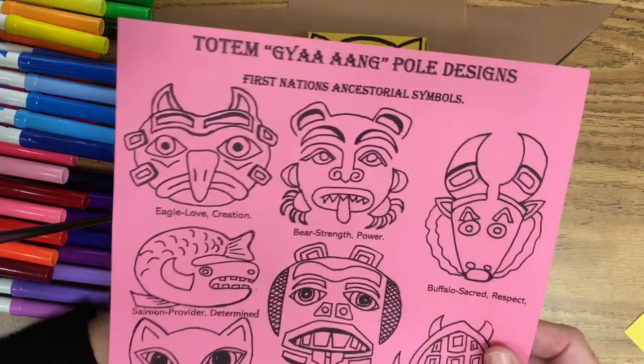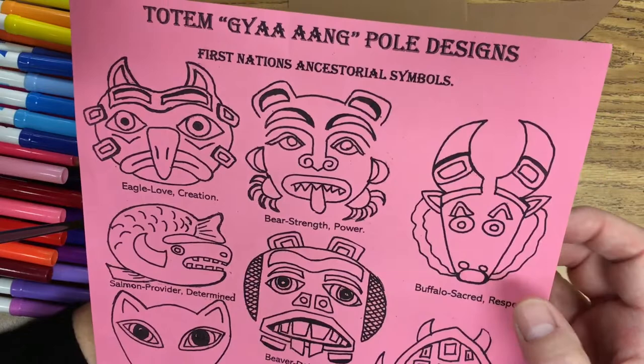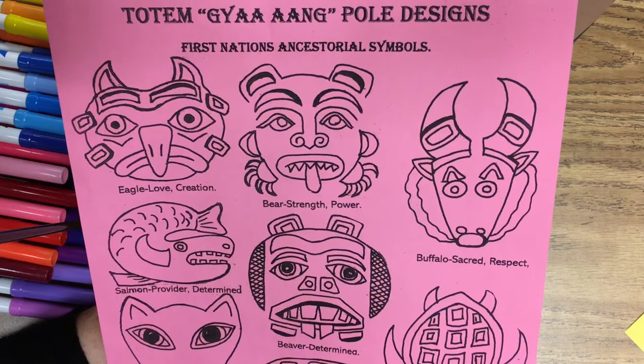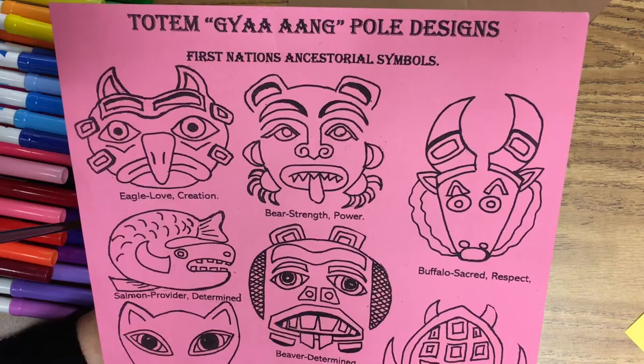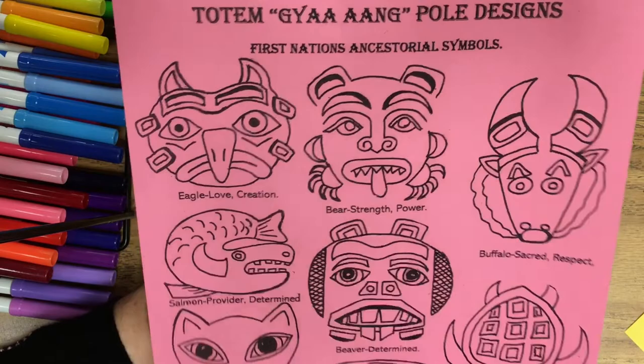If you look at the First Nations ancestral symbols, some of these may have meaning to you as well. For example, the buffalo, I really connect with the buffalo. When I learned about the buffalo's history, I had deep sympathy for the buffalo. They were almost extinct, down to 300 buffalo at one point. And when I went out to see them this summer, I felt a great connection to the buffalo. You may have great connections to some of the other ancestral animals as well.